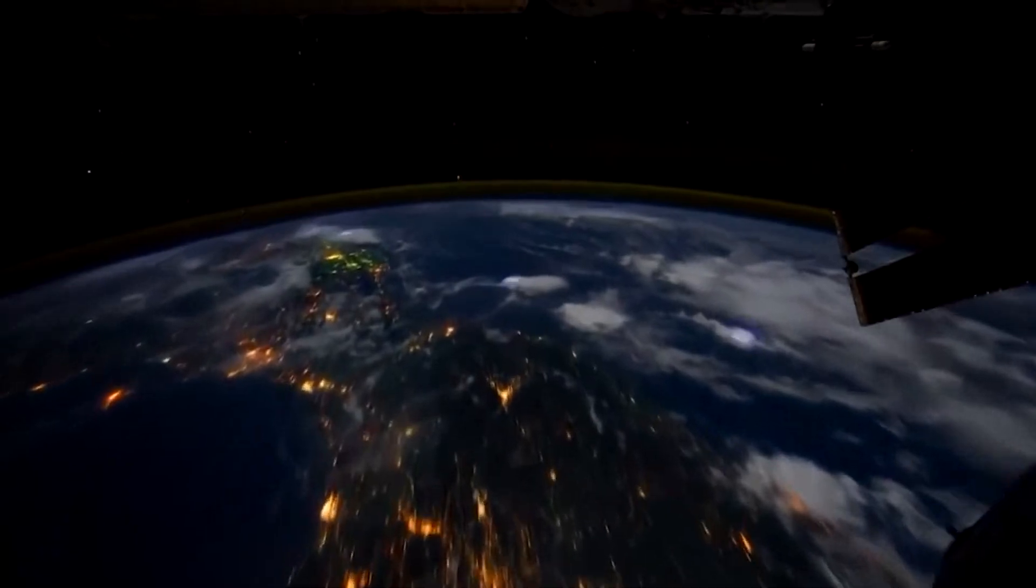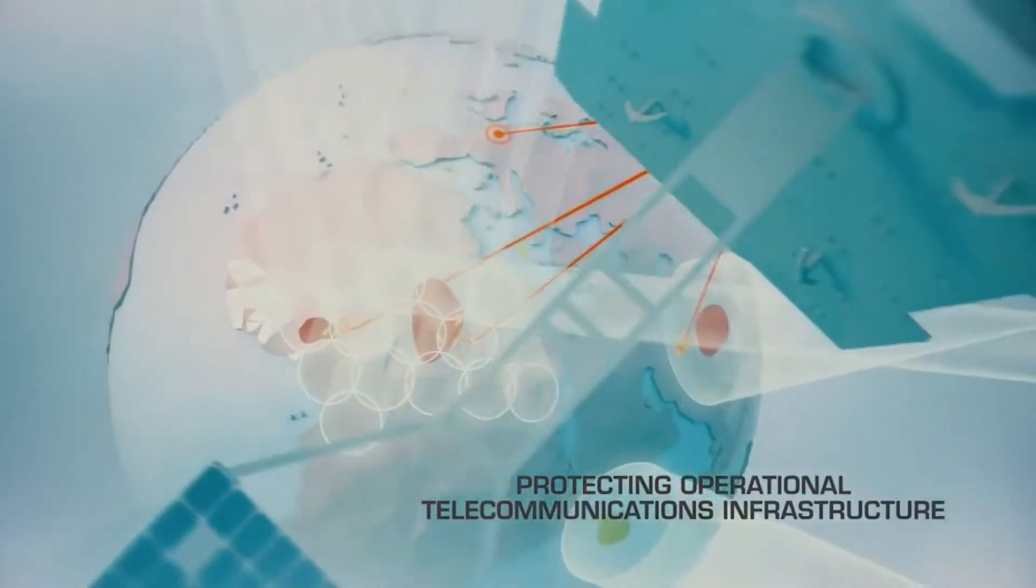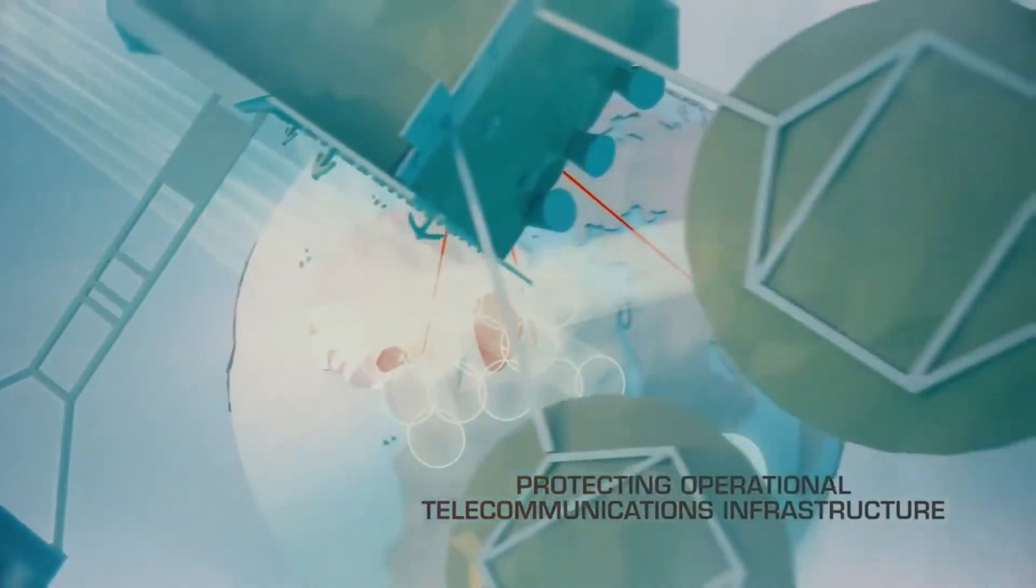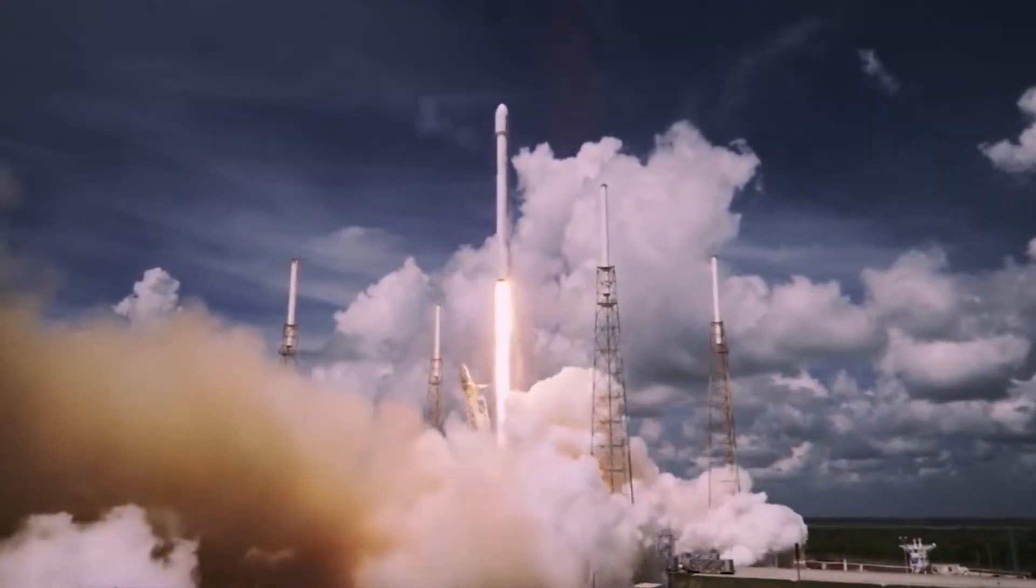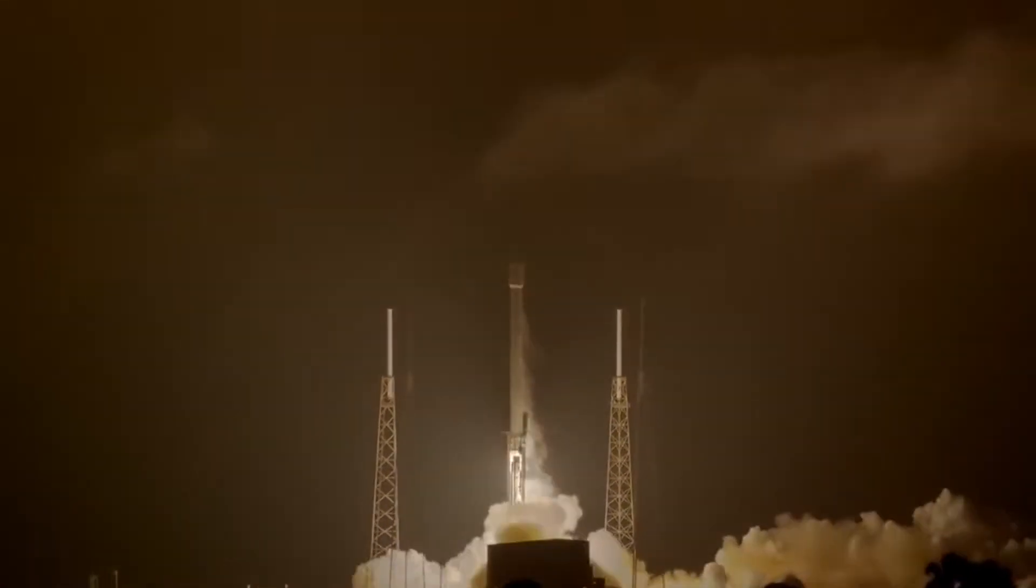Elon Musk's SpaceX was poised to launch a long-delayed navigation satellite for the U.S. military, trying for his second day to complete its first designated national security mission for the United States. A successful launch would be a significant victory for Musk, a billionaire entrepreneur who spent years trying to break into the lucrative market for military space launches long dominated by Lockheed and Boeing Co. It marked SpaceX's first so-called national security space mission, as defined by the U.S. military, SpaceX said.